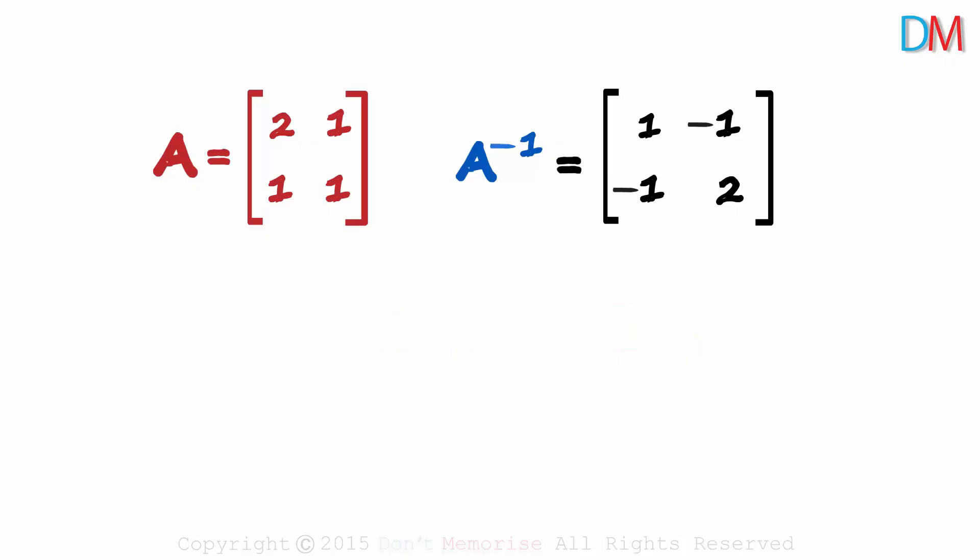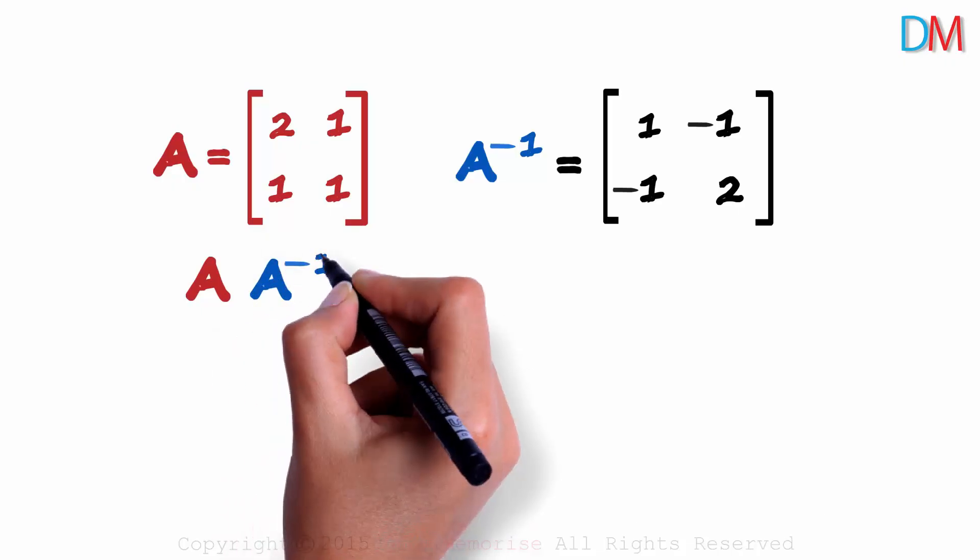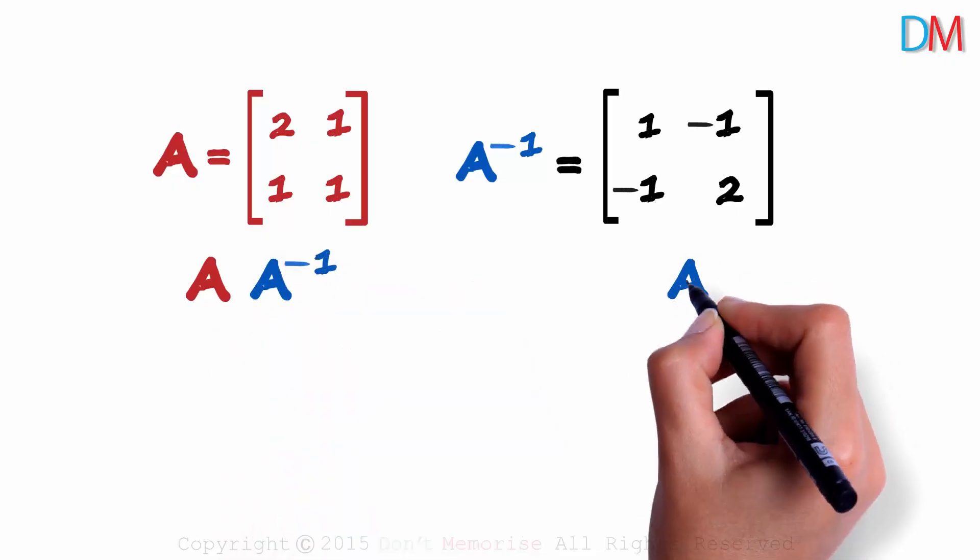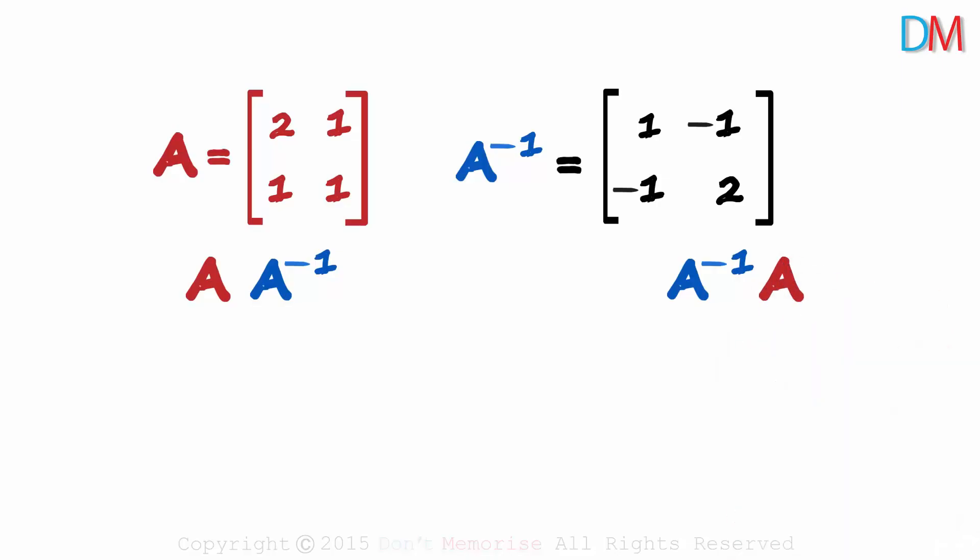On the left side, we multiply A with A inverse. And on the right, we multiply A inverse with A. Remember that matrices are non-commutative. A times B may or may not equal B times A. We need to verify both these products.